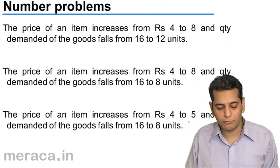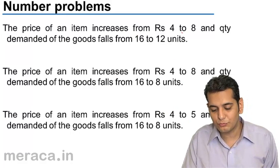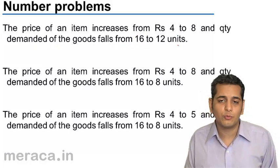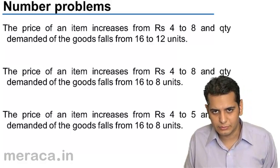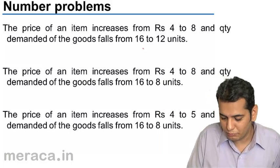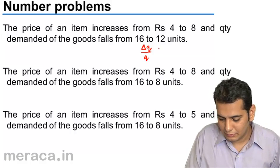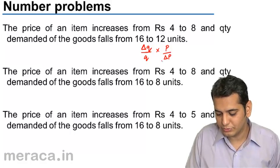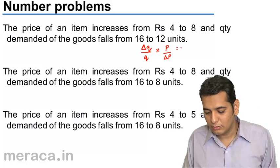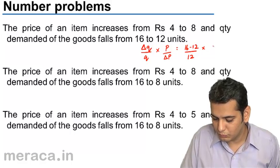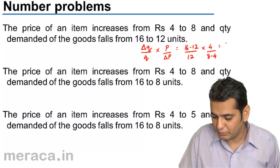Now let's solve some problems. The price of an item increases from rupees 4 to 8, and the quantity demanded falls from 16 to 12 units. Using the formula: change in quantity divided by original quantity, multiplied by original price divided by change in price — that is (16 minus 12) upon 12, multiplied by 4 upon (8 minus 4) — which gives 4/12 into 4/4.